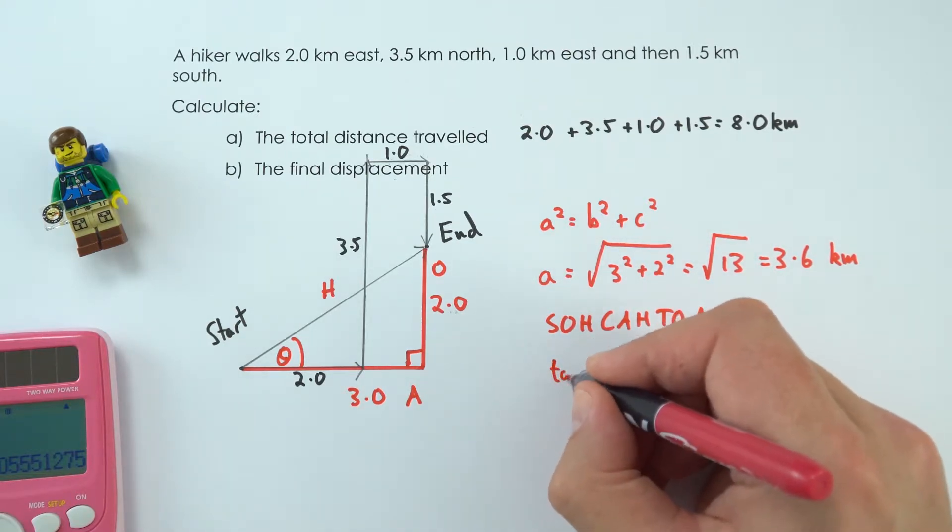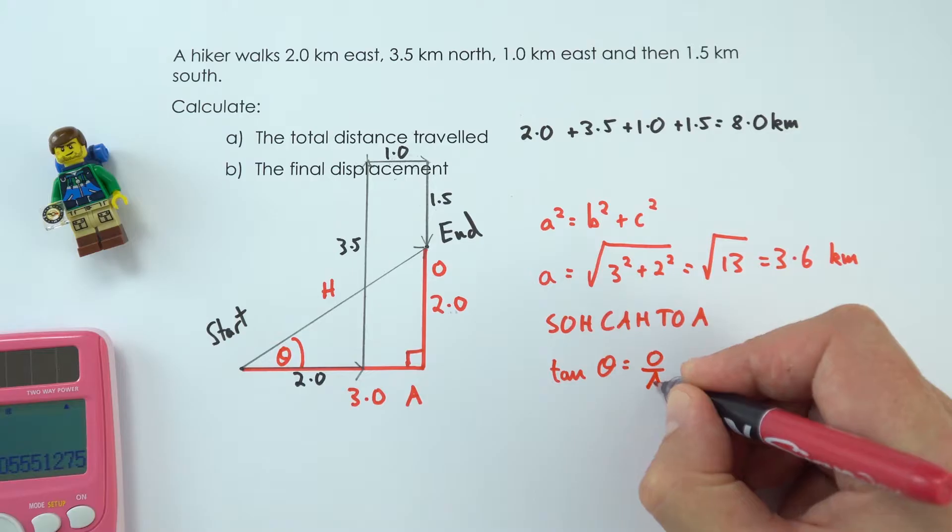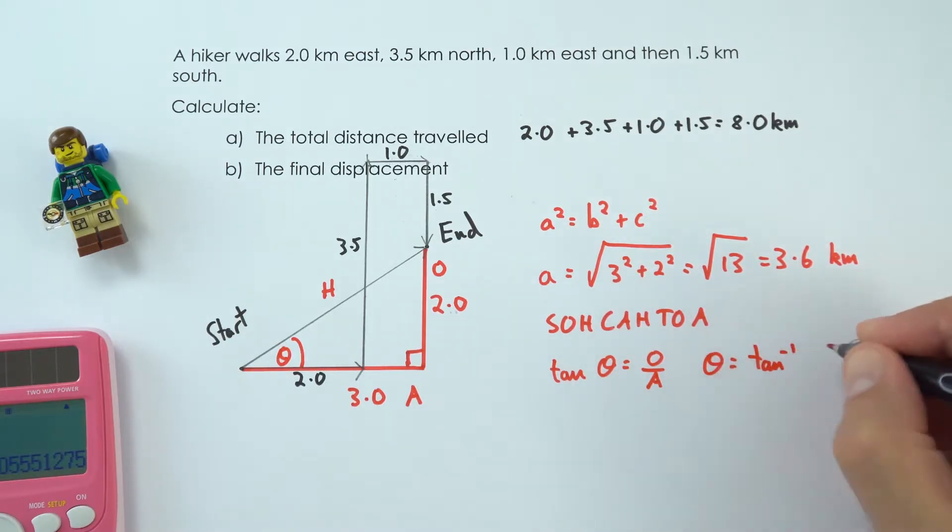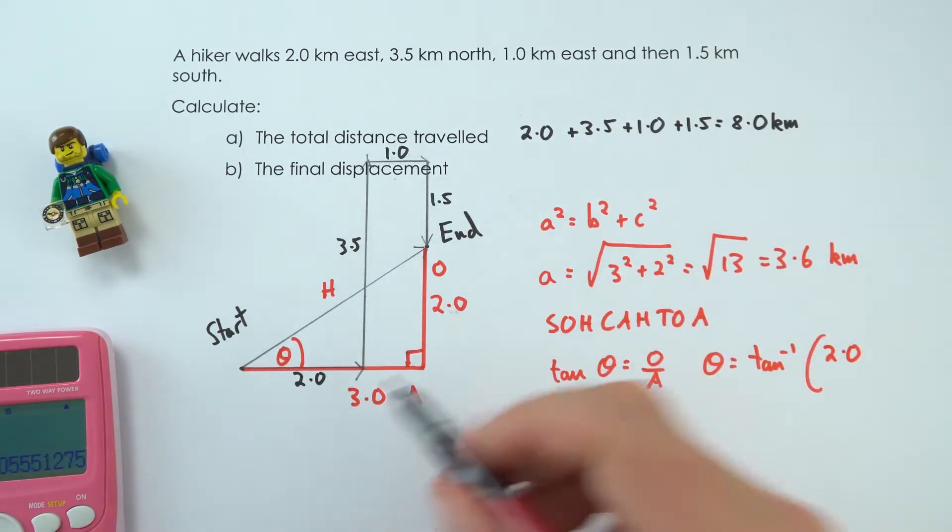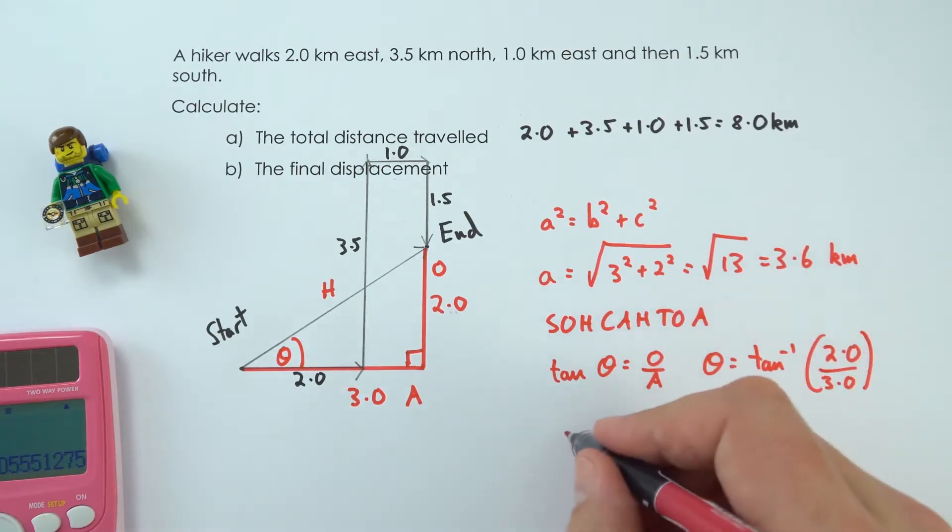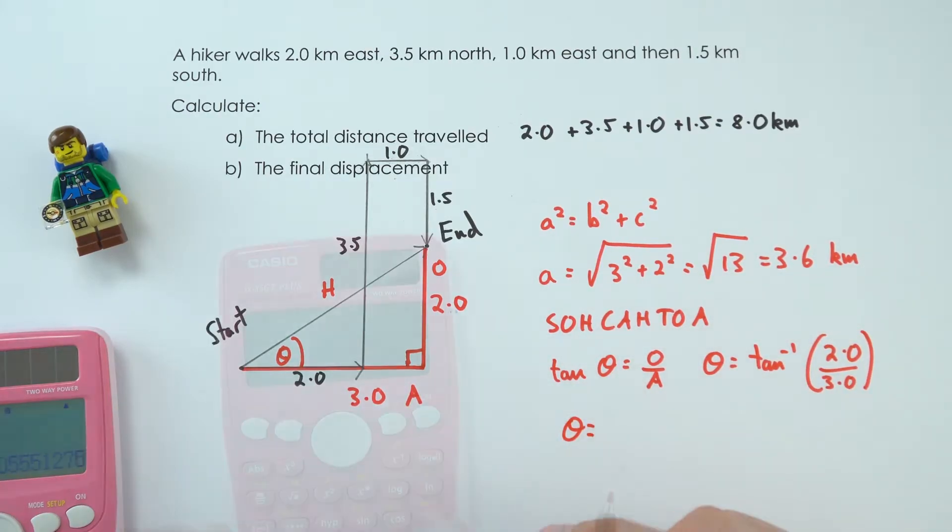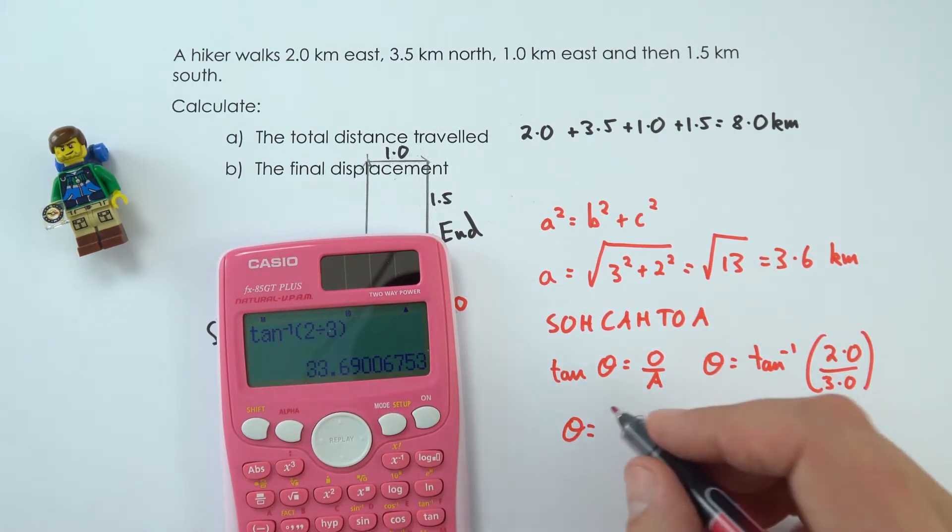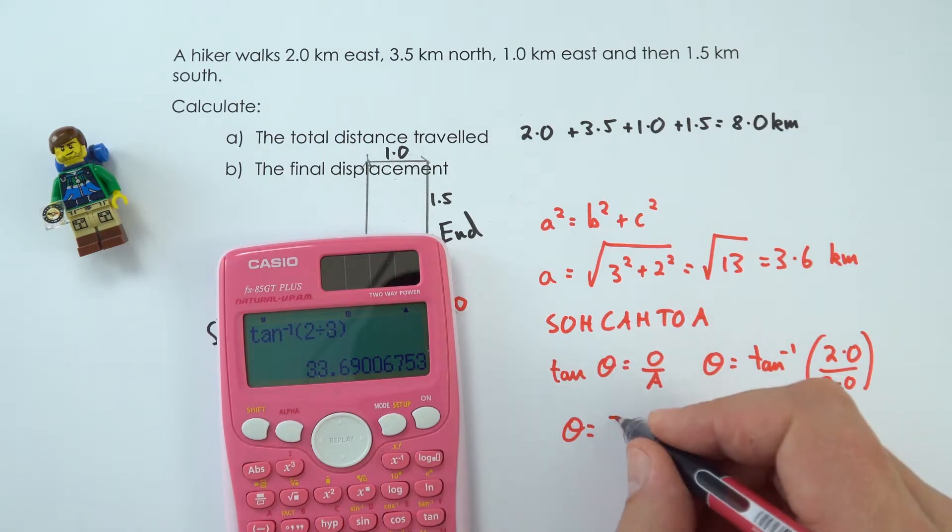We can say that tan theta is equal to the opposite over the adjacent, and that means theta is going to be inverse tan of the opposite side, which is 2.0, divided by the adjacent side, which is 3.0. I can put that into my calculator, and that means we've got inverse tan of 2 divided by 3, and that gives an answer equal to 33.7 degrees.